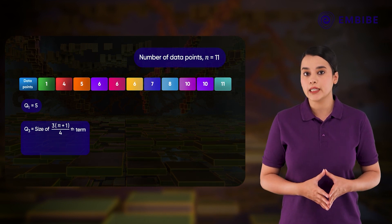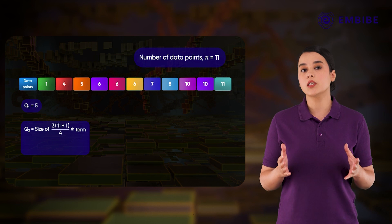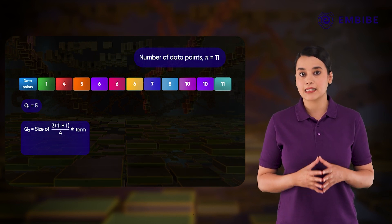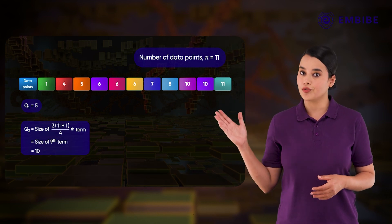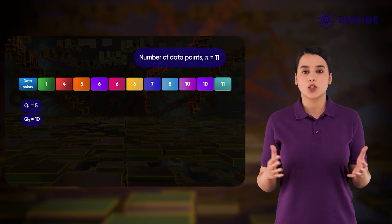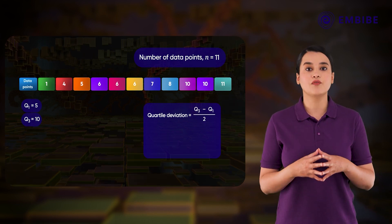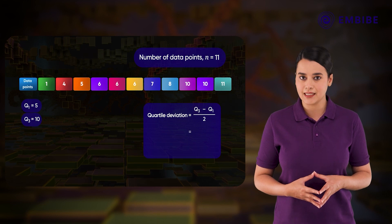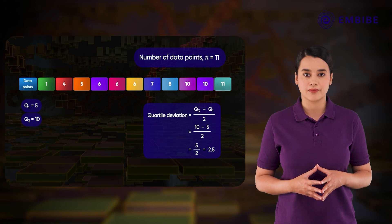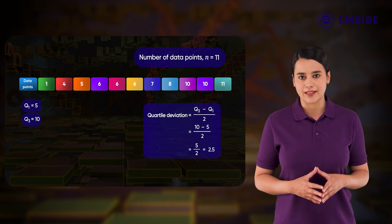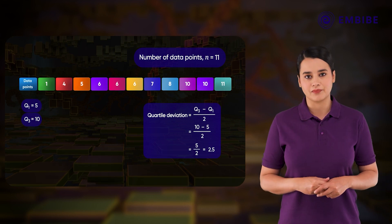The third quartile Q3 is at position 3(11+1)/4, that is the 9th term, which is 10. So Q3 equals 10. The quartile deviation is half the difference between Q3 and Q1, that is (10 minus 5) divided by 2, which equals 2.5.